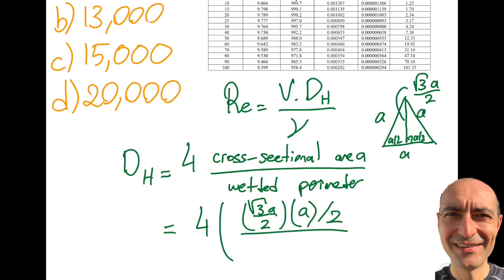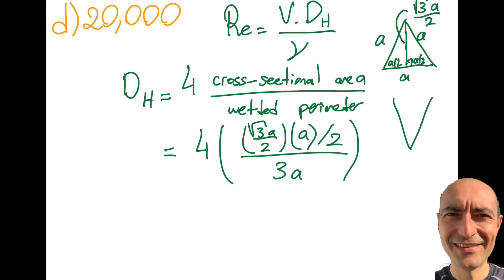What about the wetted perimeter? I will get a plus a plus a because it's a closed pipe. By the way, just for reference, this can be an open channel. The geometry may have the top open, and then you'd have a plus a in that particular case as the wetted perimeter. But now I'm doing 3a.